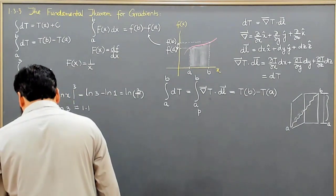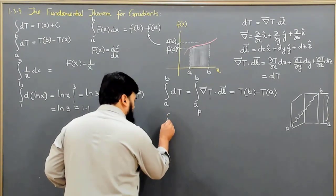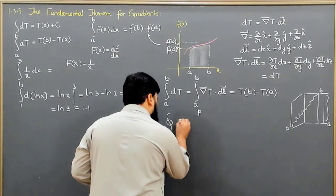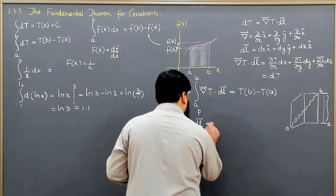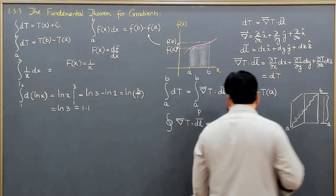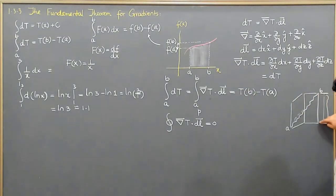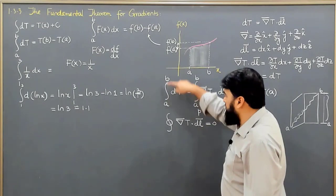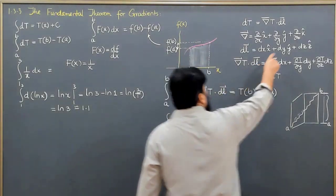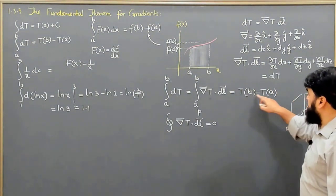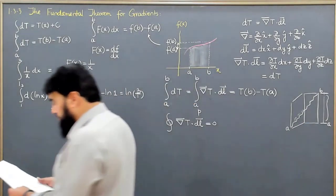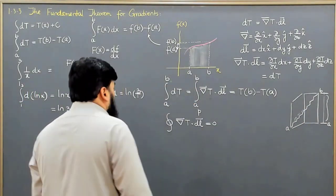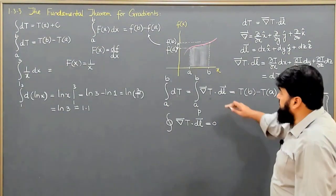Corollary 2: if we have a closed path integral of gradient(T)·DL, this equals zero. A closed path means we return to the starting point, so the limits go from A back to A. Therefore T(A) minus T(A) = 0. Around a closed path, returning to the original position gives a result of zero.